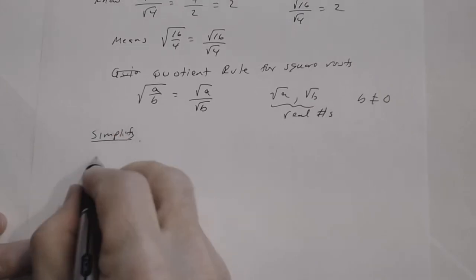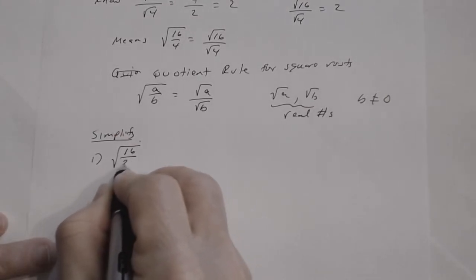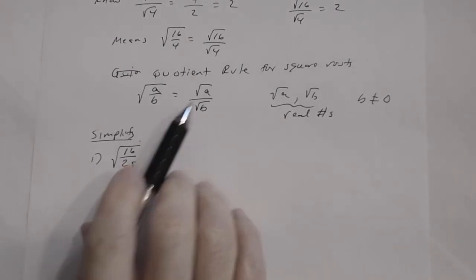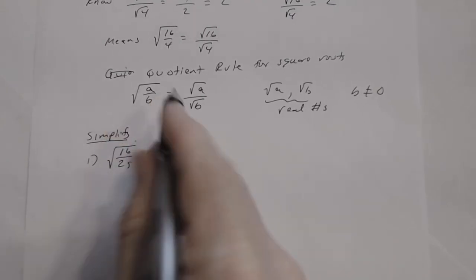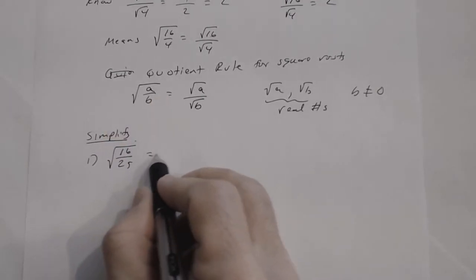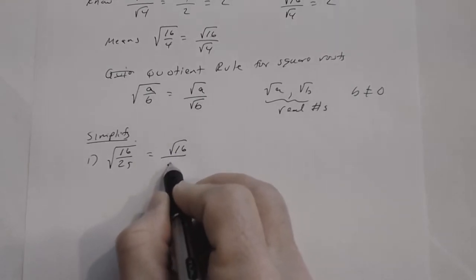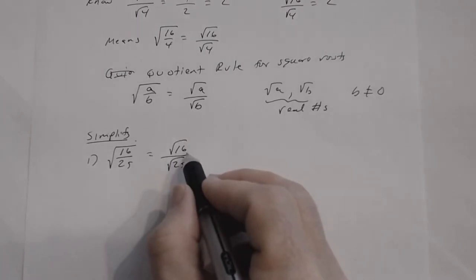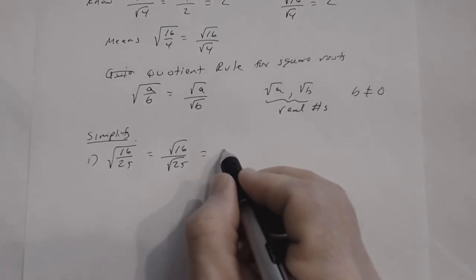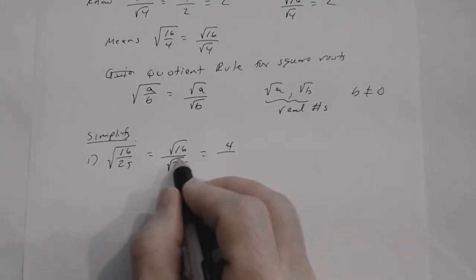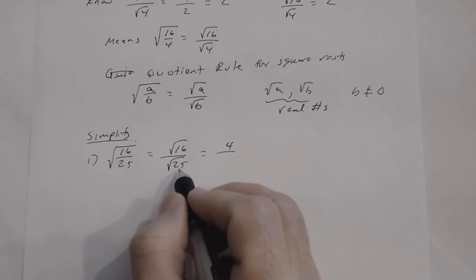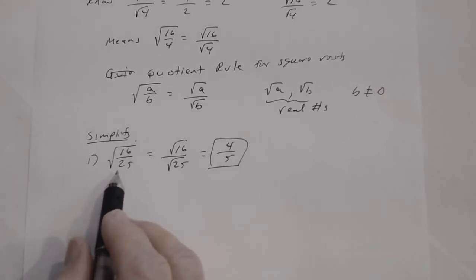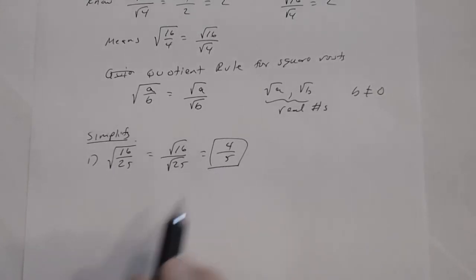Number one: simplify the square root of 16 divided by 25. First, I'll rewrite this using the quotient rule — the square root of a fraction becomes the square root of the numerator divided by the square root of the denominator. The square root of 16 is 4, since 16 is a perfect square. The square root of 25 is 5, since 25 is a perfect square. So the answer is 4 fifths.